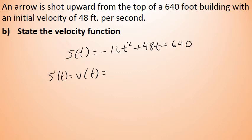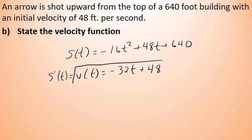The derivative of negative 16t squared is negative 32t, and the derivative of 48t is 48. The constant 640 disappears. By differentiating the position function, we get the velocity function: v(t) = negative 32t plus 48, which tells us the velocity of this arrow in feet per second at any point in time.